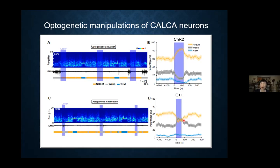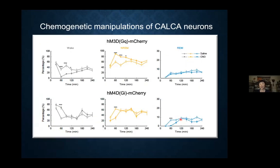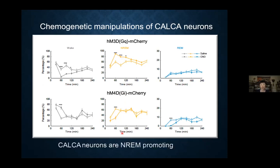We also did chemogenetic activation and inactivation. Activation through GQ caused an increase in non-REM sleep, and inactivation through GI caused a decrease in non-REM sleep. Based on both optogenetic and chemogenetic activation and inactivation, we know that these calca neurons are indeed non-REM promoting, which is our second criterion.